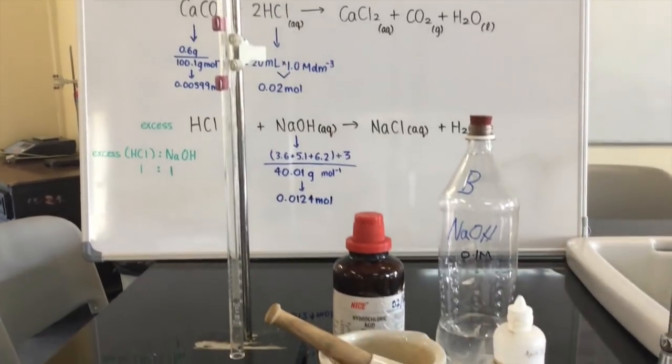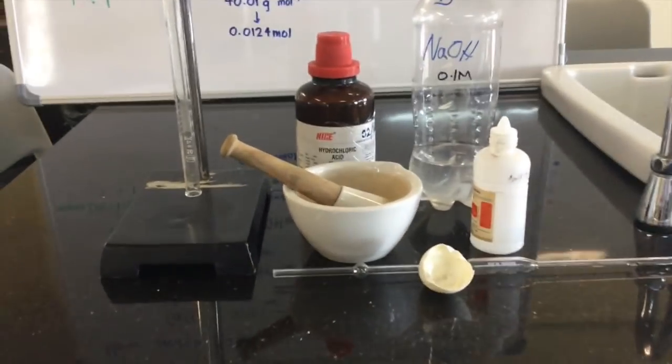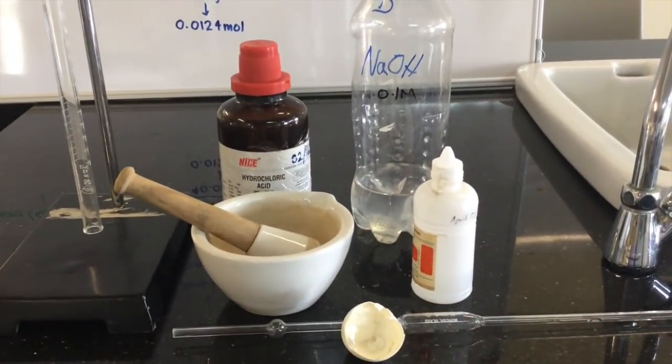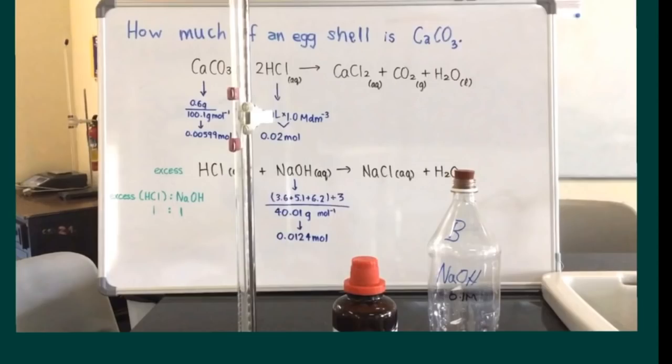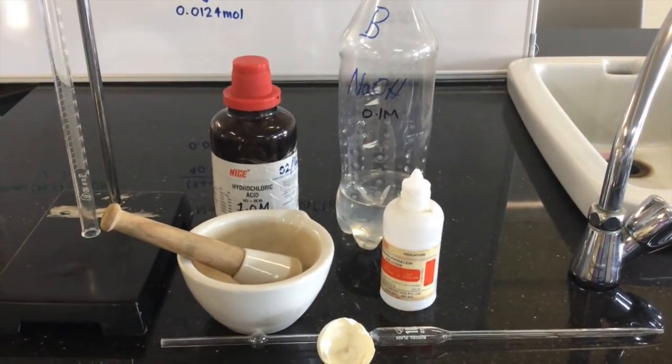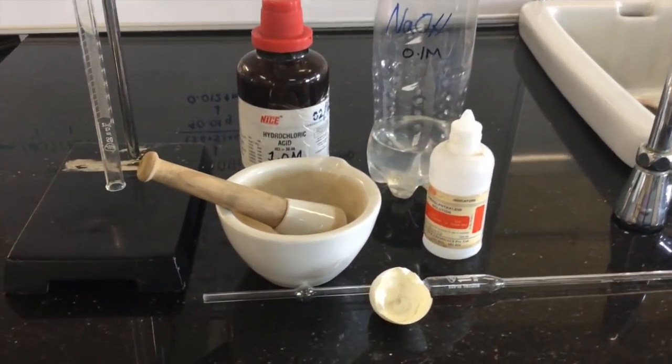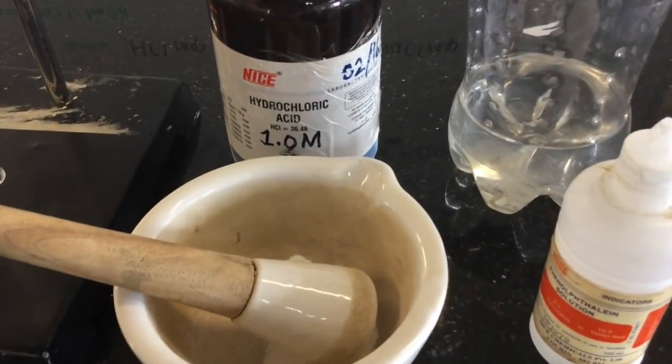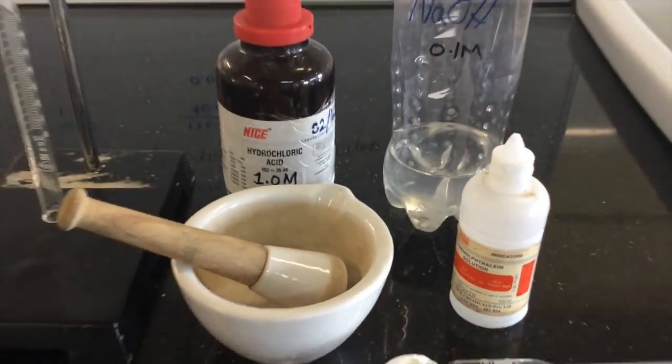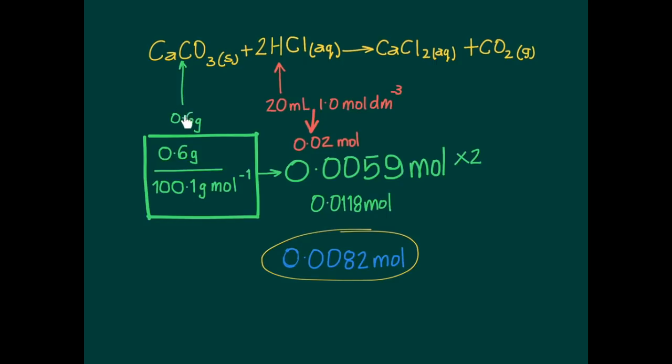So assuming that we have 100% calcium carbonate in an eggshell, we will then try to predict the outcome of what is known as a back titration. But because we are going to be doing the back titration in reverse, then we are actually considering things in the forward direction.